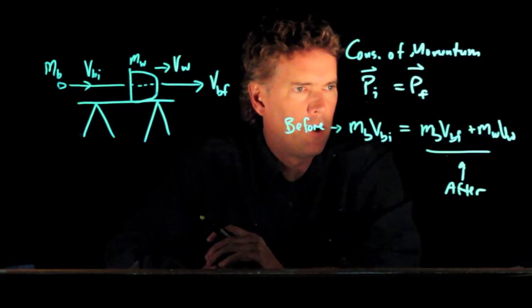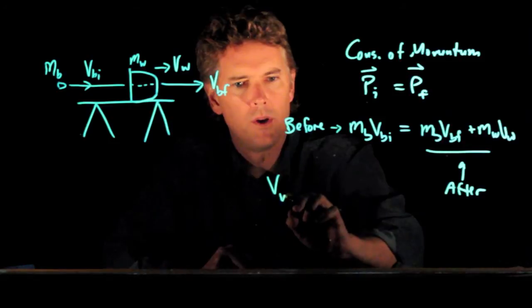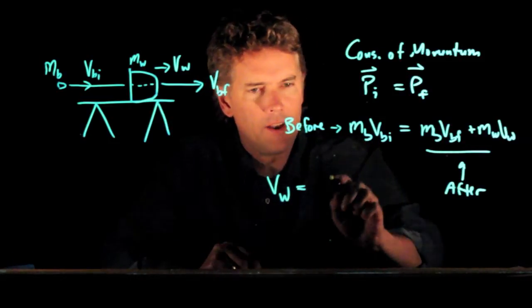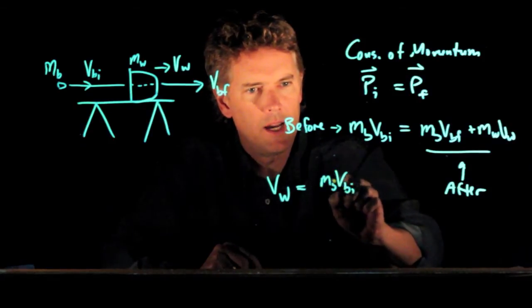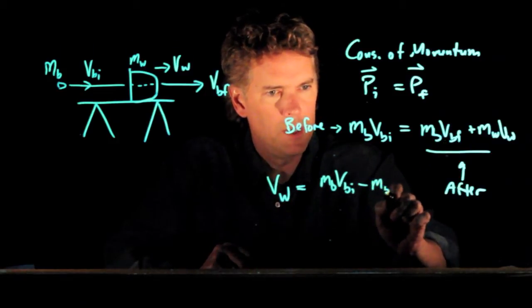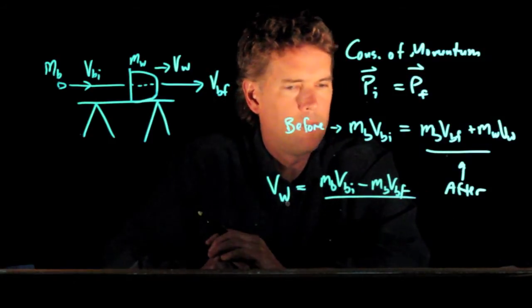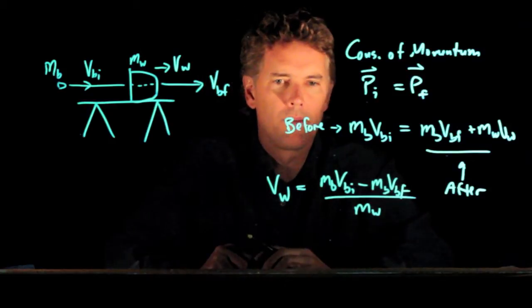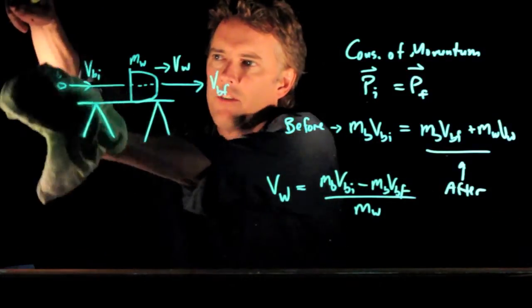And if we have all those numbers we can solve this for the speed of the wooden block. VW is going to be what? Well I have MBVBI. I need to subtract this thing MBVBF and I need to divide by the mass of the wooden block. And now let's try that with some numbers and see how it works out.